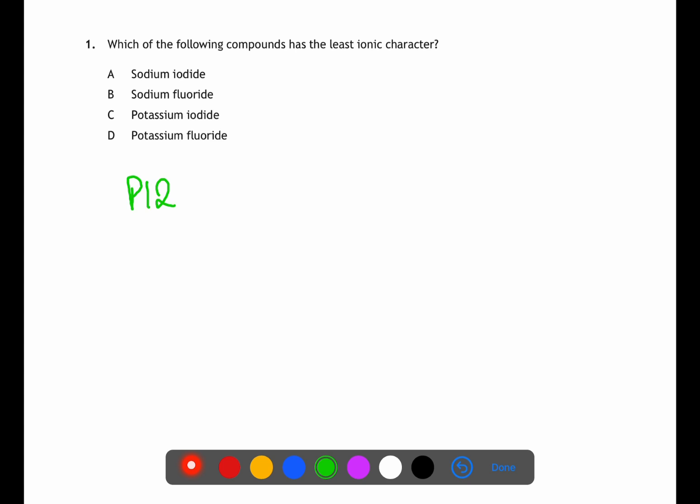For question one we're looking for the compound with the least ionic character. To do this you need to look at page 12 of your data book where you can find the electronegativity values. The smallest difference in electronegativity will be the least ionic character.